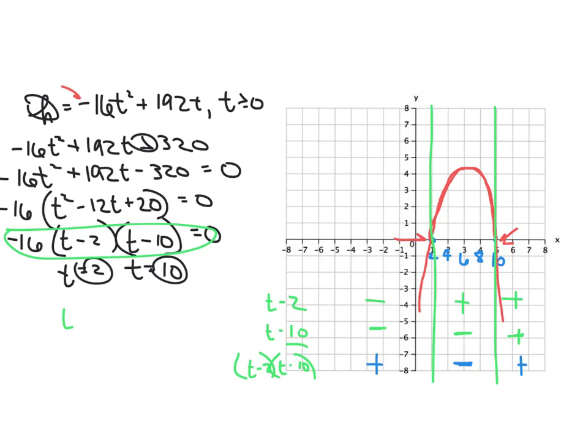Because any number bigger than 10 minus this 10 is going to give me a positive number. So when I multiply these two, I'm going to get a positive here. I'm going to use blue here just so we can see. A negative here and a positive there. When I multiply those. When I multiply that by negative 16.